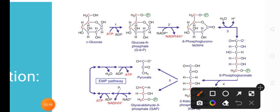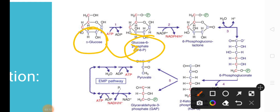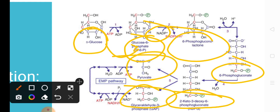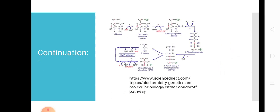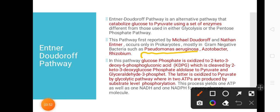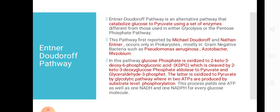To summarize: glucose is first converted to glucose-6-phosphate (with ATP), then to 6-phosphogluconolactone (with NADP+), then to 6-phosphogluconate, then via dehydration to KDPG, and finally the aldolase enzyme cleaves KDPG into pyruvate and glyceraldehyde-3-phosphate. The G3P is then converted to pyruvate via glycolysis. Remember, this pathway is followed by gram-negative bacteria — Pseudomonas aeruginosa, Azotobacter, and Rhizobium — which is very important for MCQ exams.